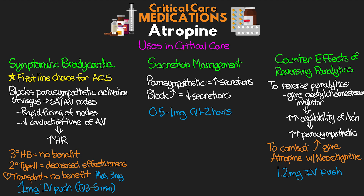There is one last use you could potentially see in some situations, and that's when dealing with organophosphate poisoning. This is something that, depending where you work, you might come across. Most commonly in poisoning cases, organophosphates are found in insecticides. It's also interesting to know that they are the key component in nerve agent chemical weapons.